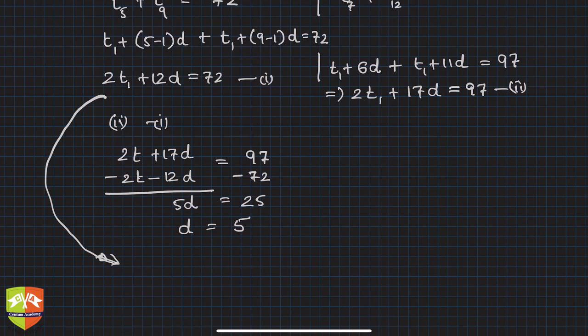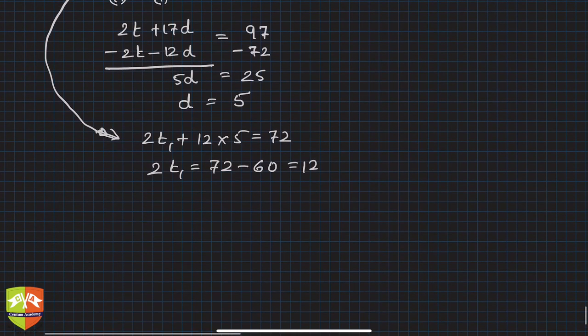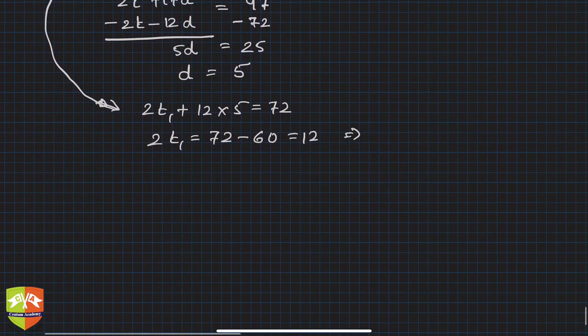So I'm now using equation 1 to find out t1. So 2t1 plus 12 into d, which is 5, equals 72. So 2t1 is nothing but 72 minus 60, which is 12. Hence, this implies t1 will be equal to nothing but 12 upon 2, which is 6. So you got the first term as well.